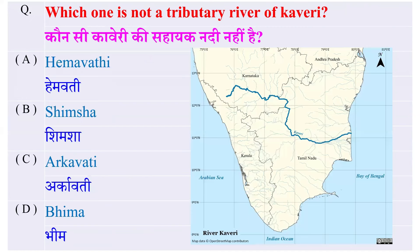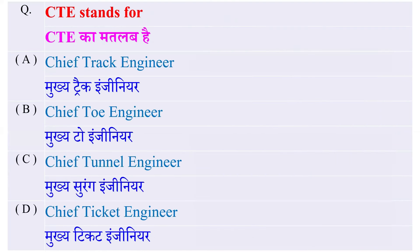Which one is not a tributary river of Cauvery? निम्न में से कौन है जो Cauvery की सहायक नदी नहीं है? Options: हेमबती, शिमसा, अर्कावती, या भीमा — and the right answer is भीमा।